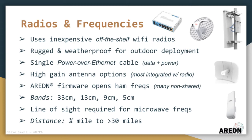They typically use Power over Ethernet, which makes them less complicated to deploy by having a single cable to the device. Many of them also have integrated high-gain antennas. The frequency ranges currently supported are the 900 MHz, 2.4 GHz, 3.4 GHz, and 5.8 GHz bands.